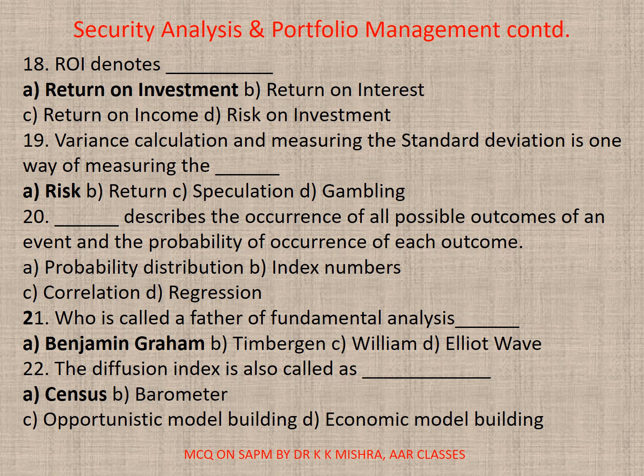Question 20: Dash describes the occurrence of all possible outcomes of an event and the probability of occurrence of each outcome. Options: A. Probability distribution, B. Indexed numbers, C. Correlation, D. Regression — correct option A: Probability distribution. Question 21 similarly asks about describing the occurrence of all possible outcomes — correct option A: Probability distribution.